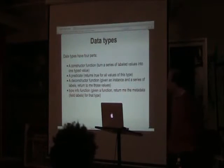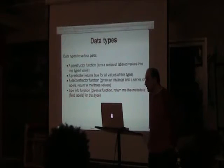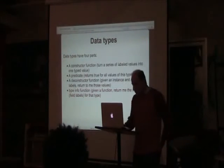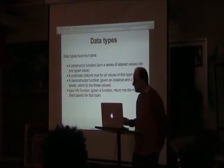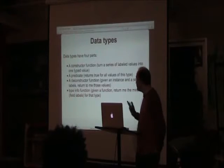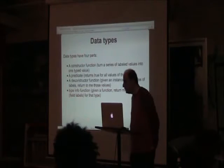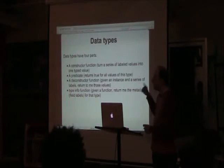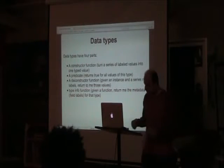The way type-info works is you pass it a function and it calls that function with the information about the data type. Usually you can figure out other values from the first value, which would be something like a symbol. The signature is that it takes an instance and a function and passes the metadata of that instance to the function.